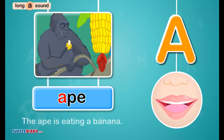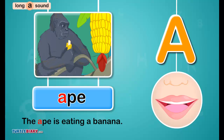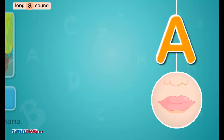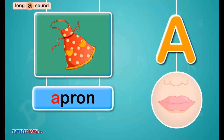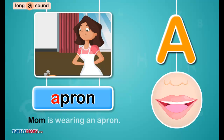The ape is eating a banana. A in apron sounds A. Mom is wearing an apron.